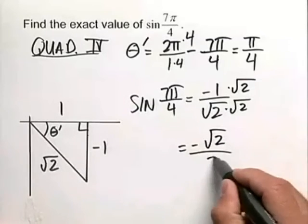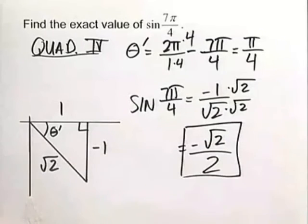So it's a negative square root of 2 all over 2. That is the exact sine value for 7π/4.